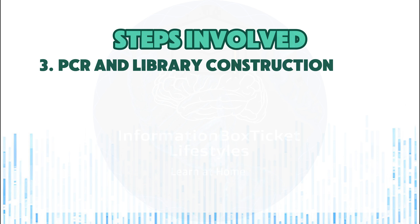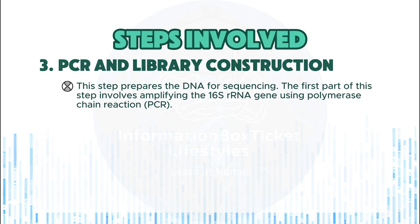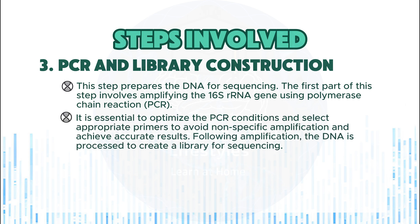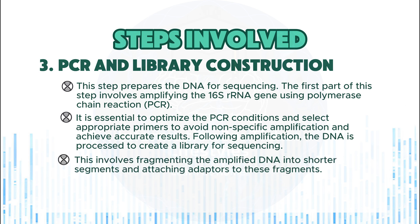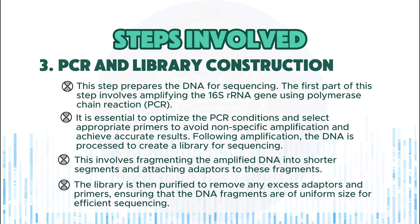Step 3: PCR and library construction. This step prepares the DNA for sequencing. The first part involves amplifying the 16S rRNA gene using polymerase chain reaction (PCR). It is essential to optimize the PCR conditions and select appropriate primers to avoid nonspecific amplification and achieve accurate results. Following amplification, the DNA is processed to create a library for sequencing. This involves fragmenting the amplified DNA into shorter segments and attaching adapters to these fragments. The library is then purified to remove any excess adapters and primers, ensuring that the DNA fragments are of uniform size for efficient sequencing.